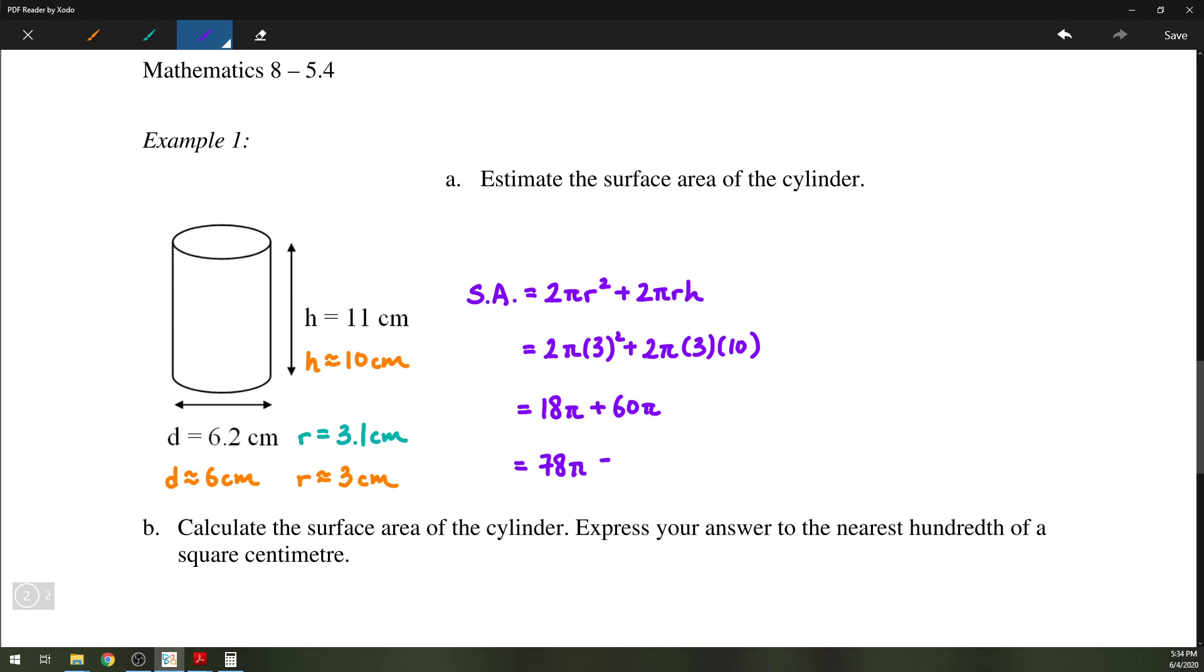So at this point, you can either use 3 as the approximation of pi or you can multiply by 3.14. Either way, you'll get a number that's approximately 245, somewhere around there. So that will be an estimate of the surface area of a cylinder.